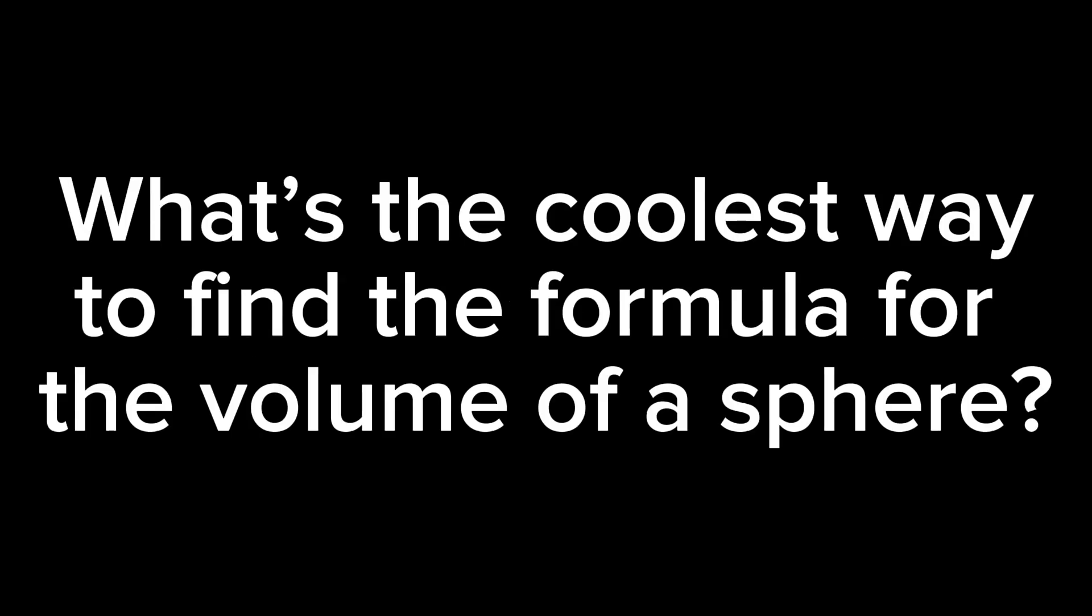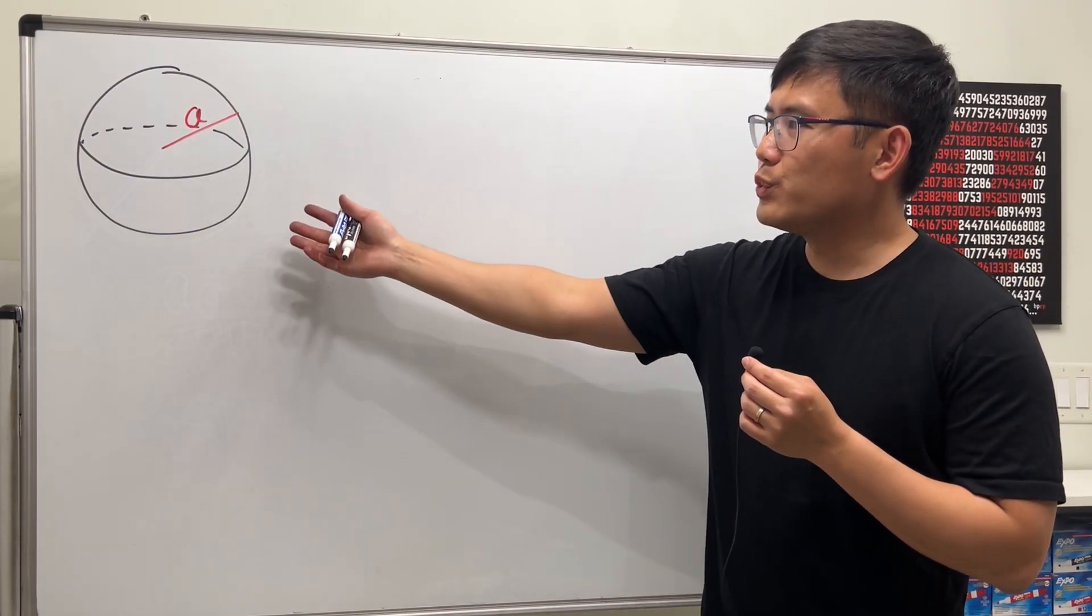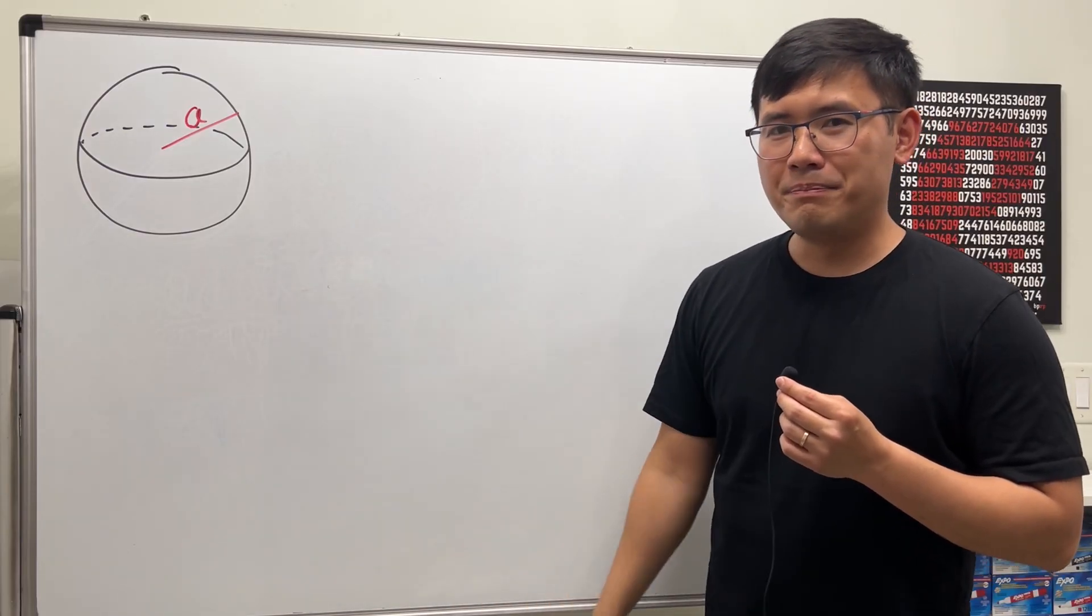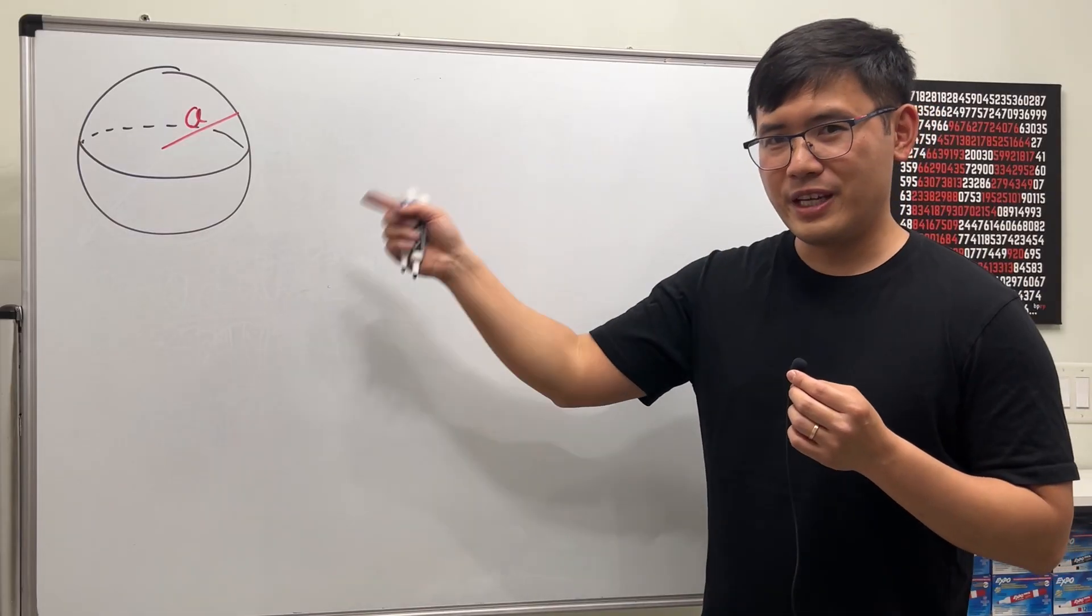If you ever ask me what's the coolest way to find the formula for the volume of a sphere, then I will tell you. It has to be using a triple integral. And because we are talking about a sphere, the best coordinate system that we use is the spherical coordinate system. So here we go.